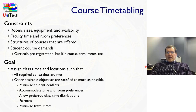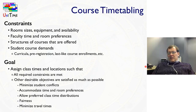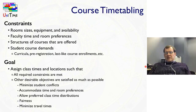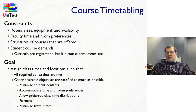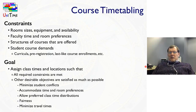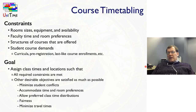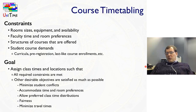In course timetabling, Unitime deals with a number of constraints. The most obvious is room sizes, equipment, and availability. There are faculty room and time preferences. The structures of the courses are often very important — not all courses are a simple lecture. They may have laboratory and discussion components that need to be coordinated. If there's a faculty member teaching a lecture, there may be associated laboratory and recitation sections. Student course demands are also very important — we want to minimize conflicts, so we have to understand what courses students take in combination with each other, using curricular requirements, pre-registration, or last-like course enrollments.